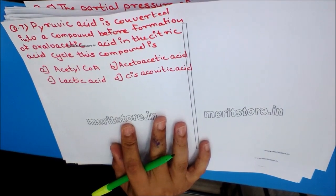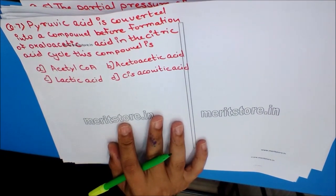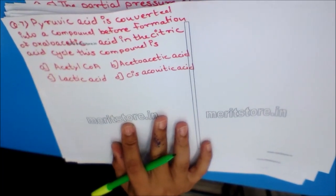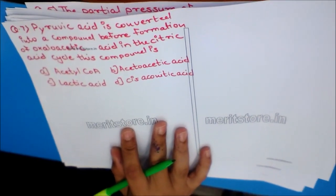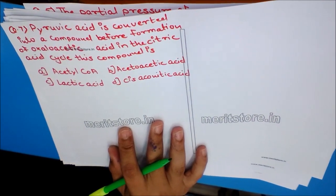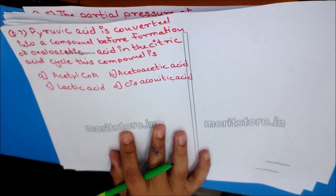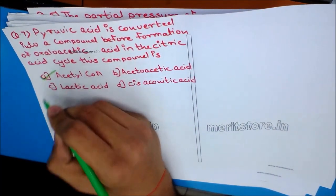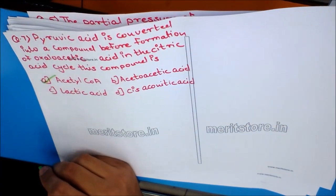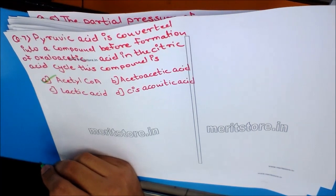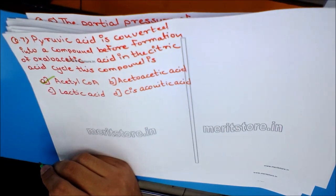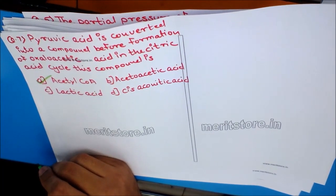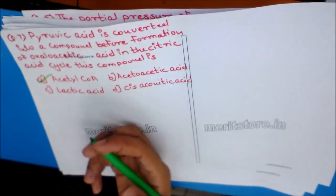Question 7: Pyruvic acid is converted into a compound before formation of oxaloacetic acid in the citric acid cycle. This compound is? Options: A) Acetyl-CoA, B) Acetoacetic acid, C) Lactic acid, D) Cis-aconitic acid. Under aerobic conditions, pyruvic acid is converted into Acetyl-CoA and CO2 is released. Acetyl-CoA then combines with oxaloacetic acid to form citric acid. The answer is option A.